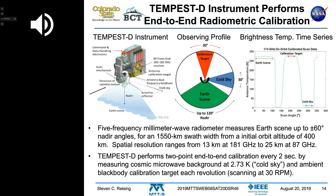Tempest D does not include traditional 37, 60, and 118 GHz frequencies. Is retrieval accuracy comparable to ATMS and MHS? The larger sensors do have lower frequencies, and it would be really nice to have those on Tempest D. We look forward to people developing deployable antenna technologies with low losses to do that from a CubeSat radiometer.